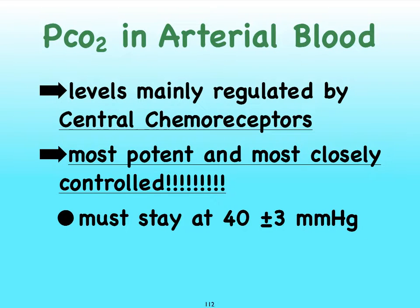Let's start out by taking a look at the partial pressure of carbon dioxide in the arterial blood. This is mainly controlled by our central chemoreceptors in our medulla. Carbon dioxide levels are very, very tightly controlled in our blood. The partial pressure of carbon dioxide is the most potent and most closely controlled — not oxygen. Our body does pretty much anything and everything to maintain a partial pressure for carbon dioxide at sea level that stays very close to 40 mmHg.